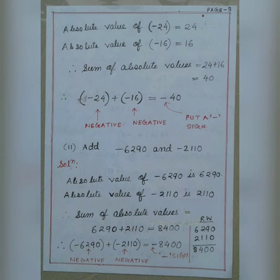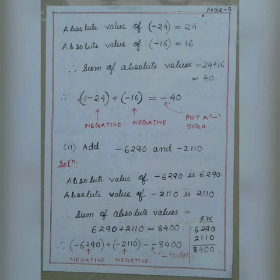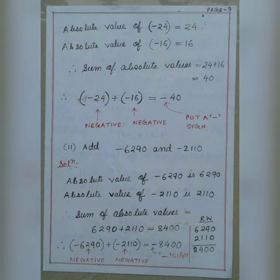Taking another example: add minus 6290 and minus 2110. The absolute value of minus 6290 is 6290, and the absolute value of minus 2110 is 2110. Therefore the sum of absolute values, 6290 plus 2110, equals 8400. As both numbers are negative, we put a negative sign before the sum. So minus 6290 plus minus 2110 equals minus 8400.